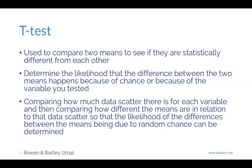Part of the t-test is comparing how much data scatter there is for each variable and then comparing the different means in relation to that data scatter — so that the likelihood of the difference between the means across your two groups being due to random chance alone can be determined. That's what the t-test is trying to do. If the spread of your two groups is really different in terms of their shape, it creates some wonky components and the algorithm of a t-test isn't able to function the way it's meant to.